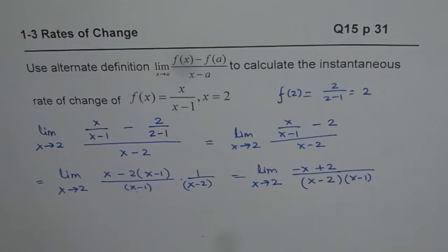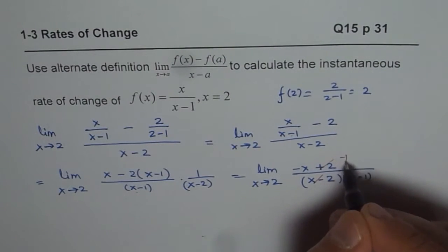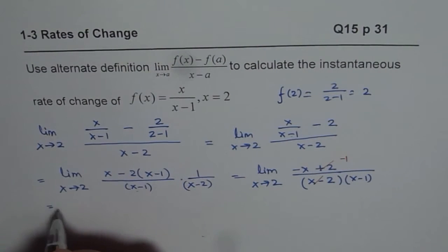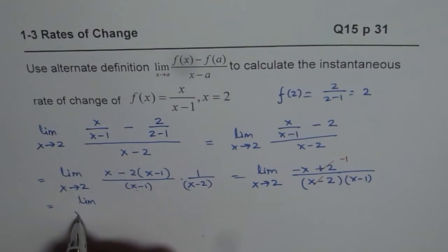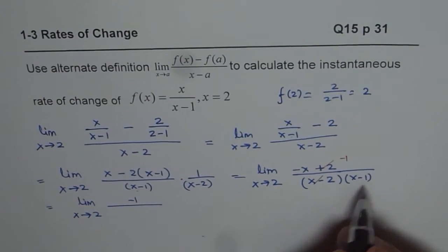Now, this factor cancels leaving minus 1 in the numerator. So, we could write this as limit x approaches 2 minus 1 over x minus 1.